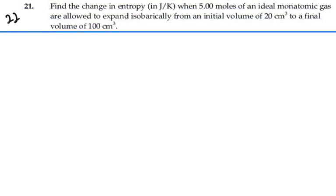Here's problem 22-21. Find the change in entropy in joules per kelvin when 5 moles of an ideal monatomic gas are allowed to expand isobarically from an initial volume of 20 cubic centimeters to a final volume of 100 cubic centimeters.